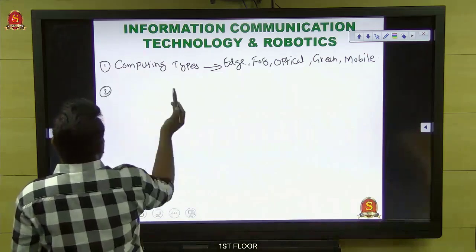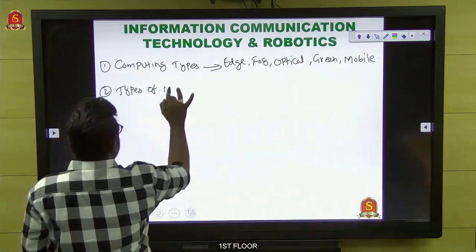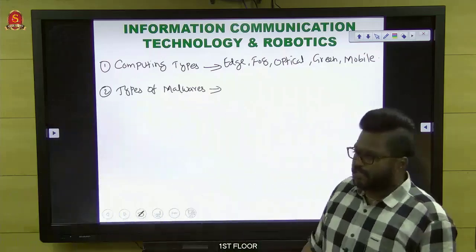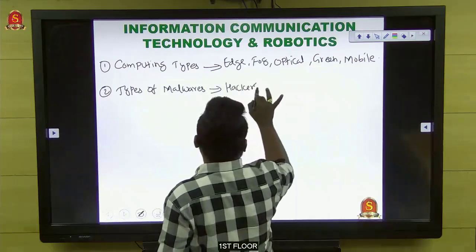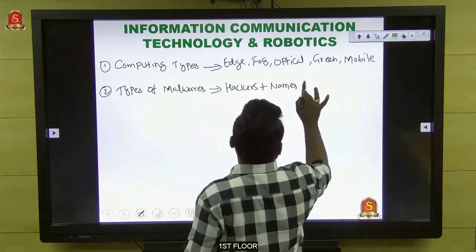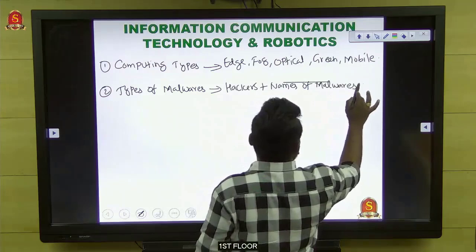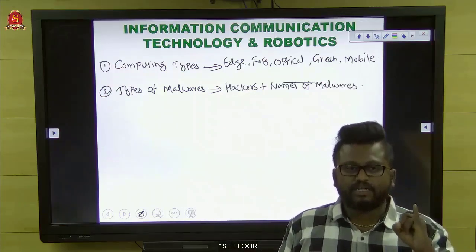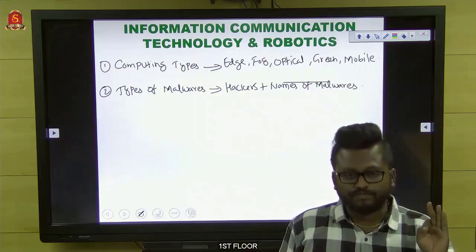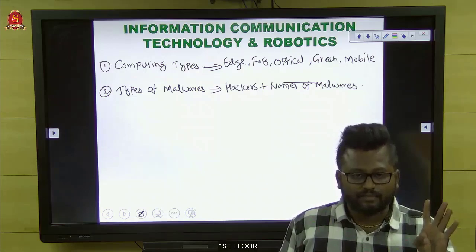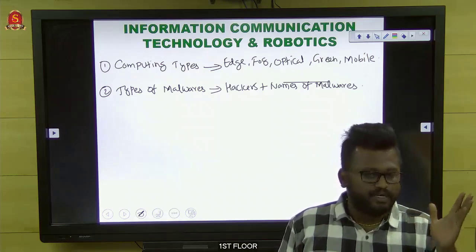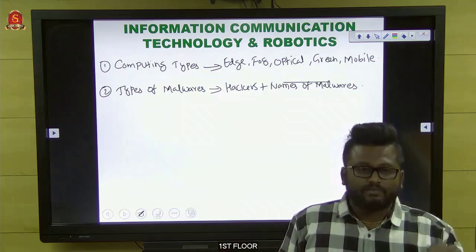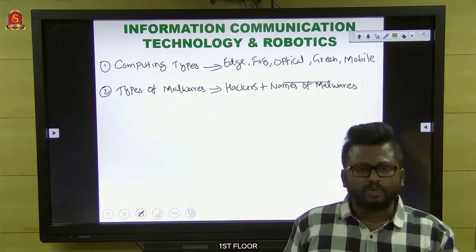The second topic is types of malwares. First focus on hackers, then on the names of malwares. Start with virus, then worms, trojan, ransomware, viper, scareware, adware, spyware — under spyware, try to complete subtypes like sabotage. These are the malware names we come across in recent times.